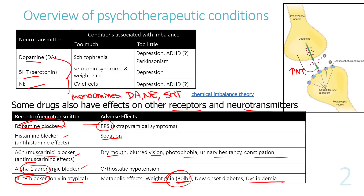Increased obesity risk also increases the risk of diabetes. These are the overview effects, and we will go through each of the five conditions in this lecture.